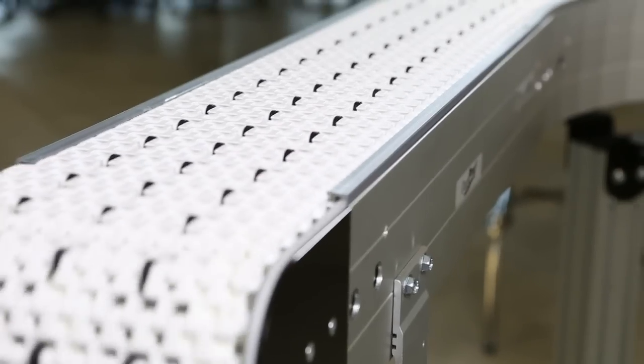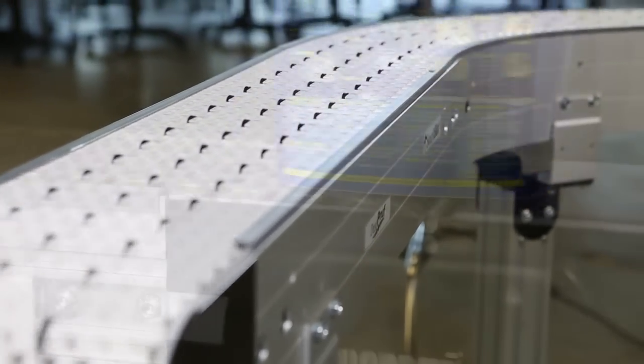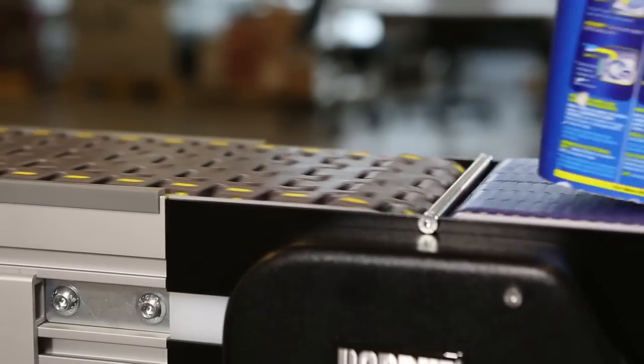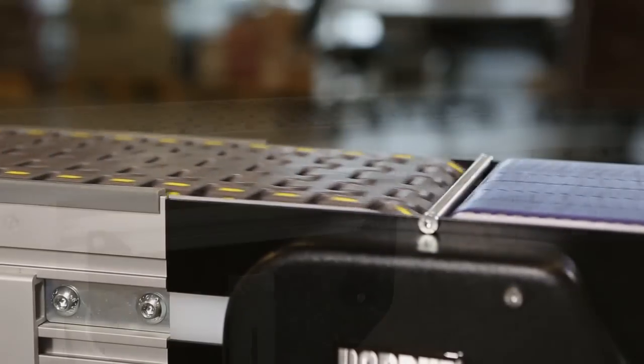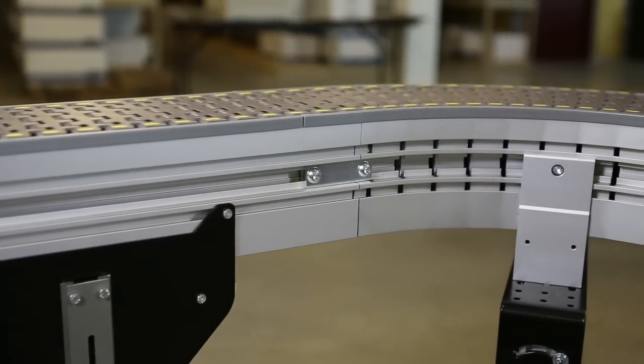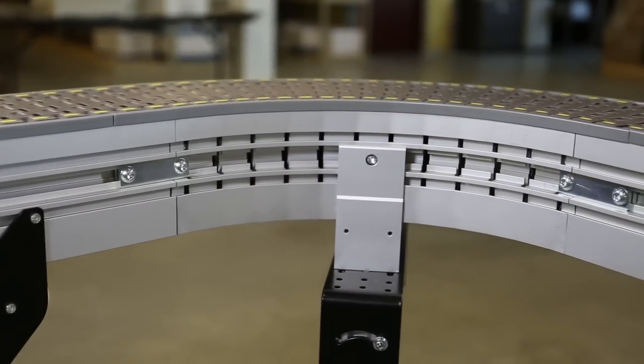Designed with ease of integration in mind, the 3200 Modular Belt Conveyor features innovative transfer options as well as complete flexibility in layout including multiple curves, inclines, and declines.